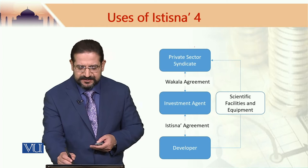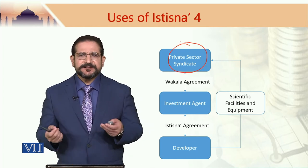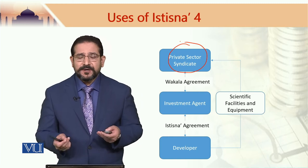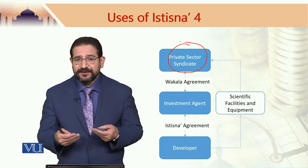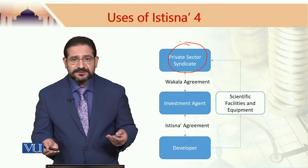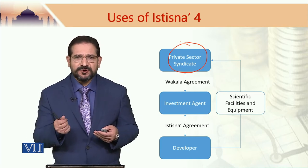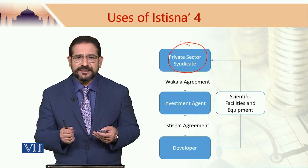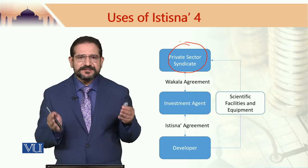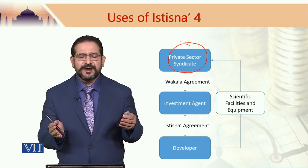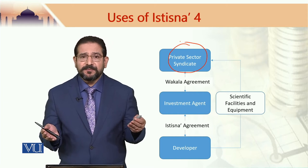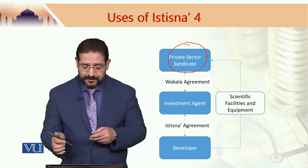There is a private sector syndicate. This private sector syndicate could comprise Islamic banks, conventional banks which have an appetite for Islamic finance, other corporates, or any other entity which has money and would like to invest in long-term infrastructure projects. If this is a syndicate, it may have 20 members, and if it is a very large syndicate, it may have 100 members.